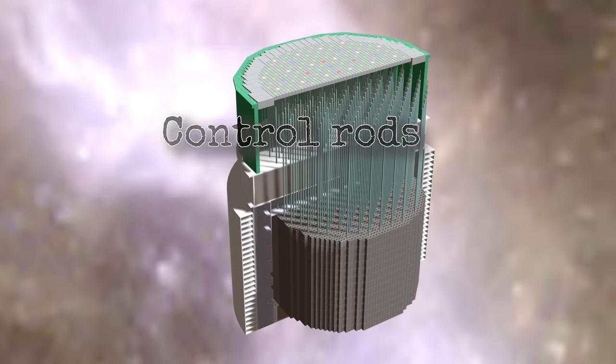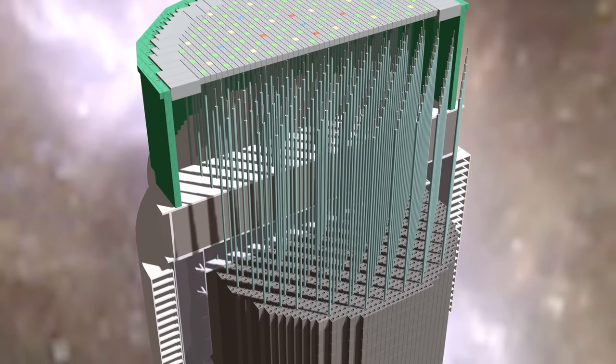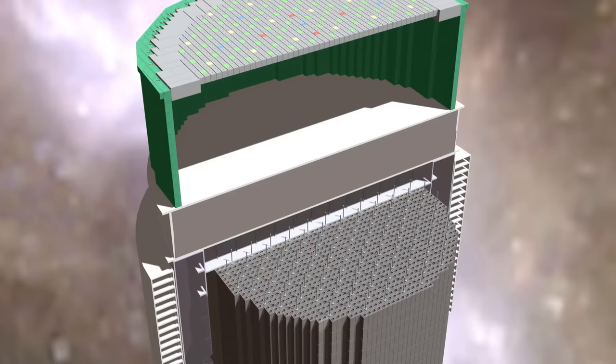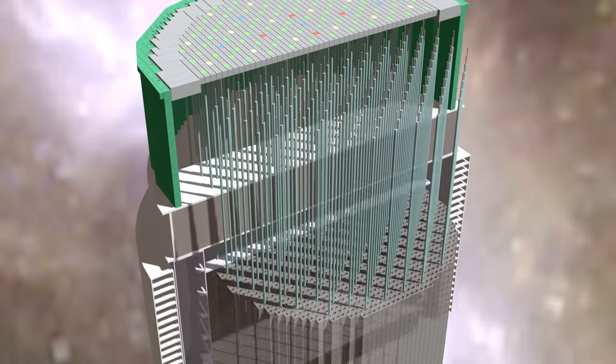A reactor must have an on-off switch and a way to set the power level. This is done with control rods. These are made of boron, which is a very powerful neutron absorber. When the rods are in the core they kill the reaction. With about 80 percent of the rods withdrawn from the core, the reactor runs at full speed.